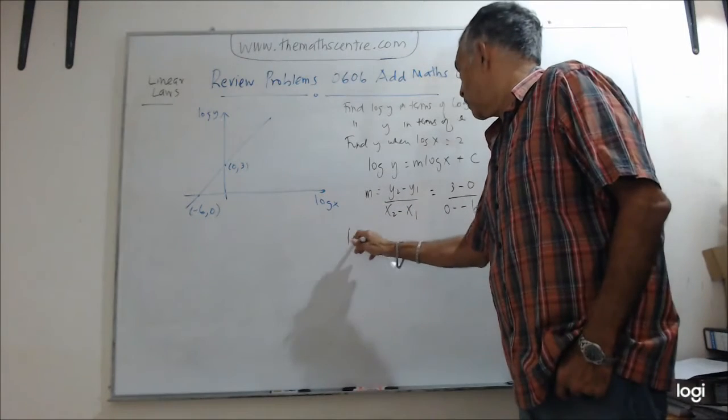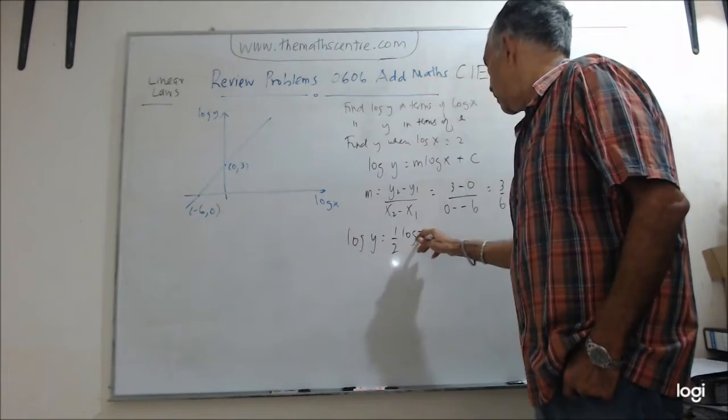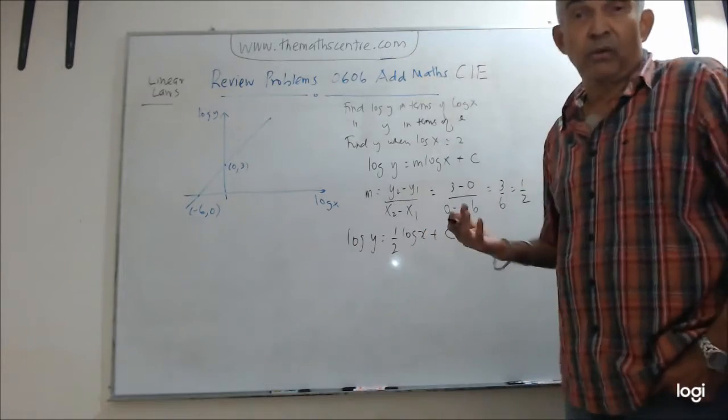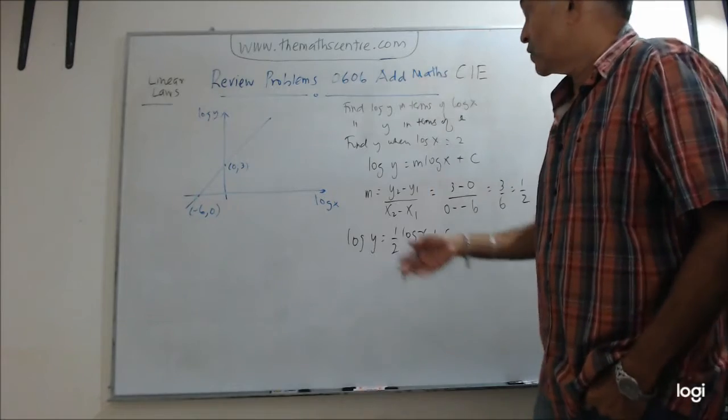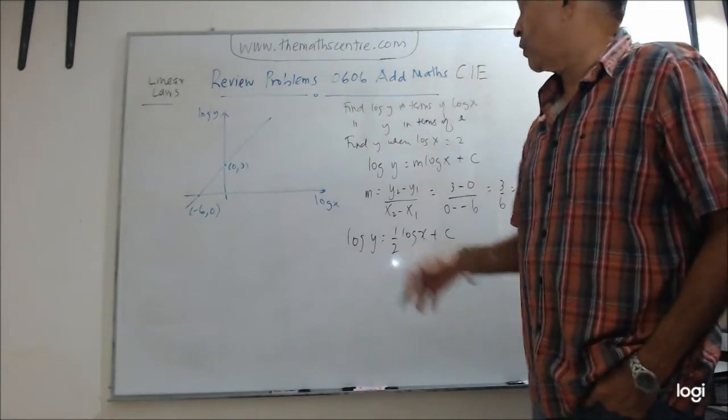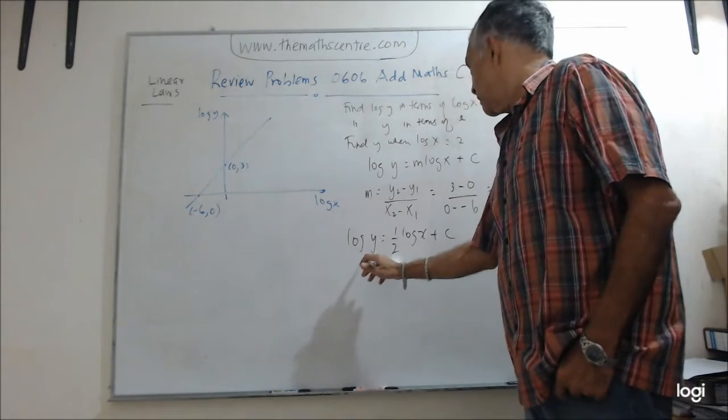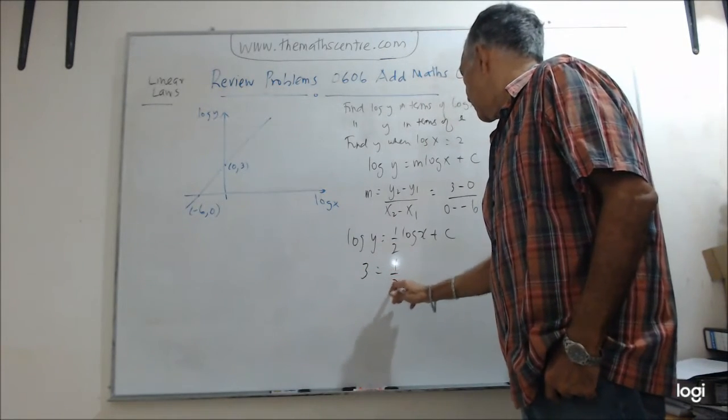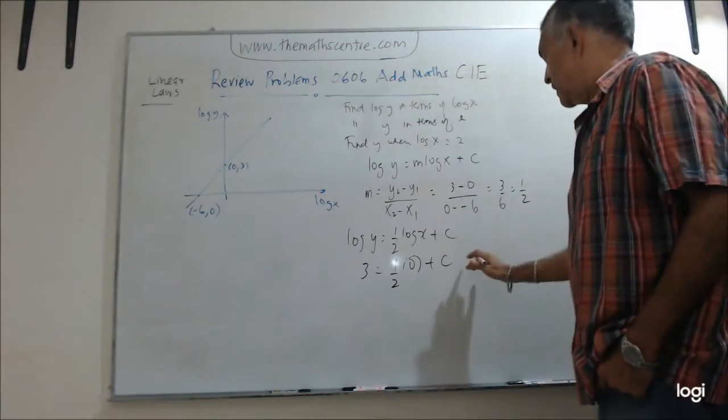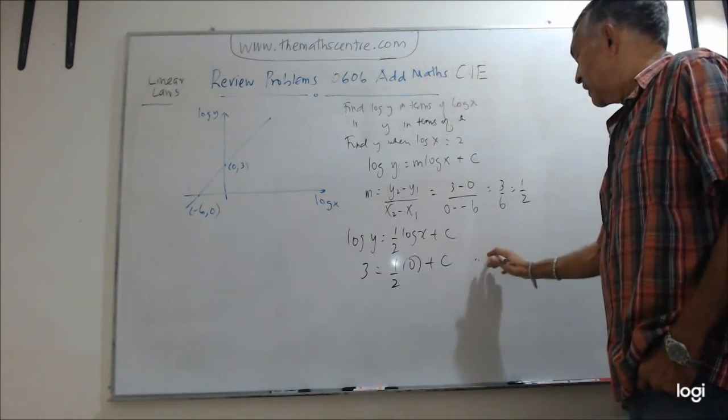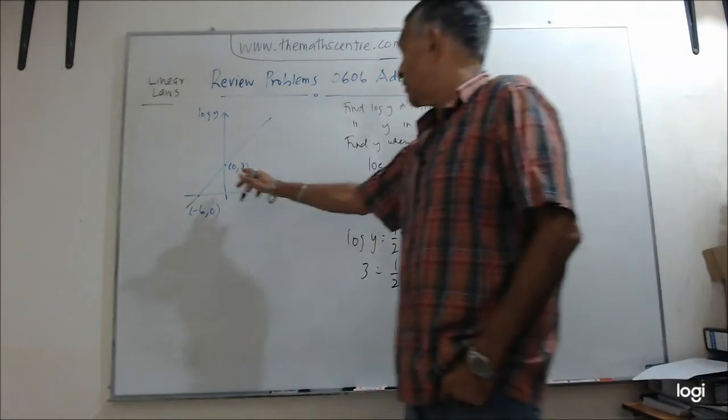Okay? So let's write down. I have log y equals to a half log x plus c. I need to find c though. So let me just plug in any of the coordinates there. So when log x is 0, log y is 3, right? When log x is 0, log y is 3. So let me write that down. I have got a half, 0 plus c. Right? And therefore, I'll get c equals to 3.